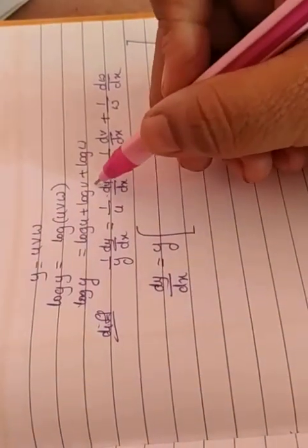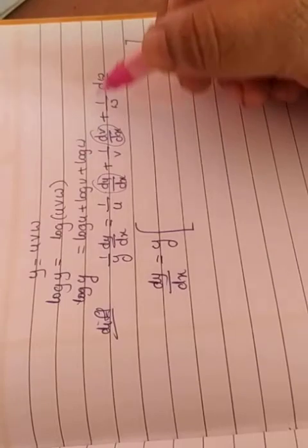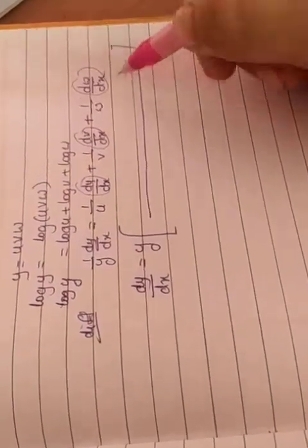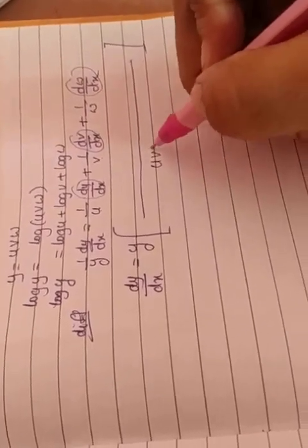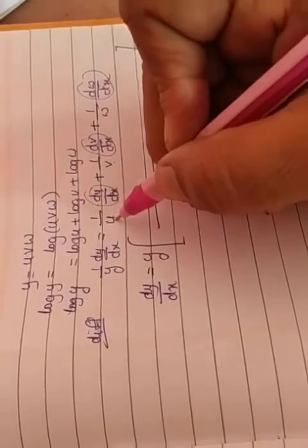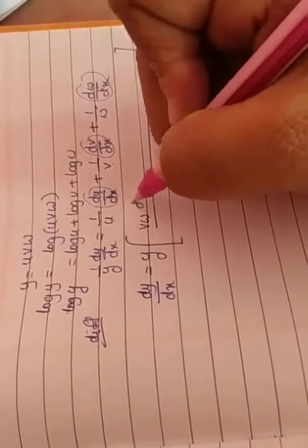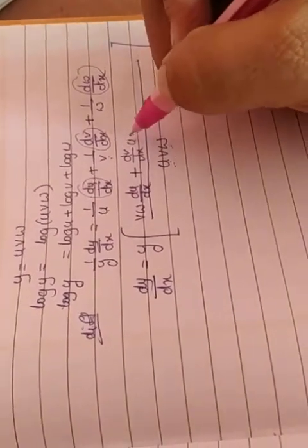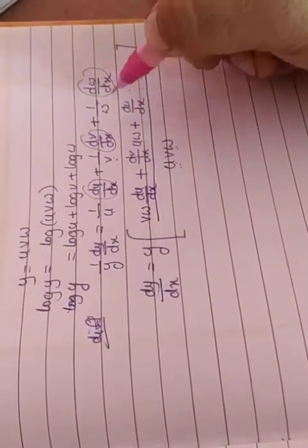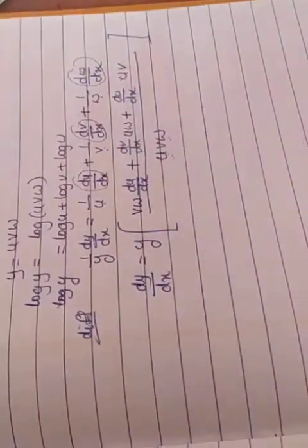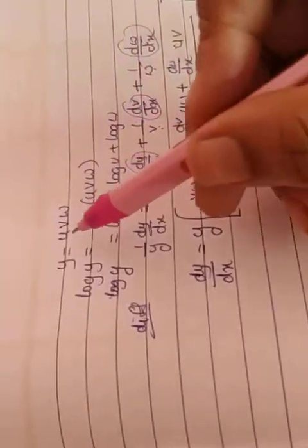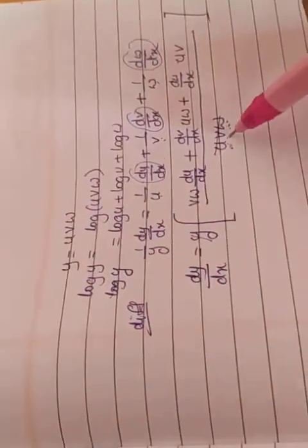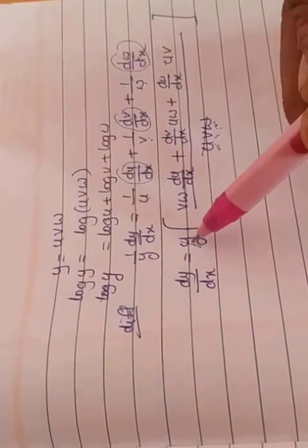So dy/dx equals y into the right-hand side. Now du/dx, dv/dx, and dw/dx are each treated as single terms. Taking LCM of the right side, the LCM will be uvw. So the first term: v·w · du/dx (since u cancels with LCM uvw), plus u·w · dv/dx, plus u·v · dw/dx — all over uvw. Now uvw is actually our y, so this y in the numerator and uvw in the denominator cancel out.